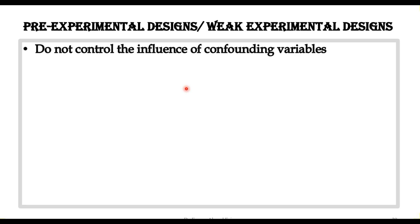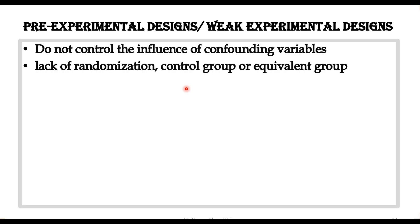Pre-experimental design is called weak experimental design because this design does not offer control for the influence of confounding variables. इस design में extraneous या confounding variables के लिए कोई strategy या planning नहीं कर सकते हैं, और इसलिए उनके effects को experiment से अलग नहीं कर सकते।